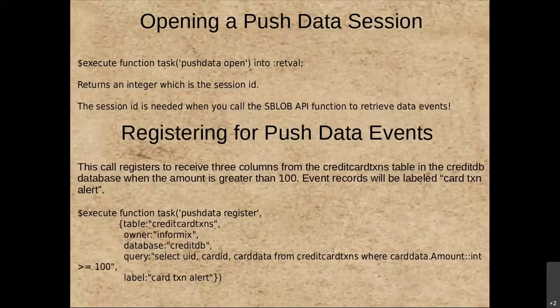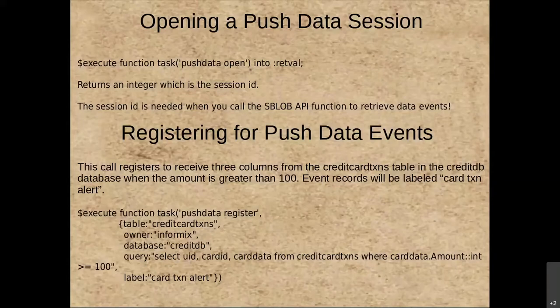You register for push data events by calling push_data_register and passing in a JSON record listing what data you're interested in — the table, owner, database, and a query to limit the data that comes back to specific data. In this example, we're selecting UID, card ID, and card data from the credit card transactions table where the amount is greater than or equal to a hundred. You can also supply a label that can be shared across multiple events you want to capture or used to differentiate events so your application can process them differently.